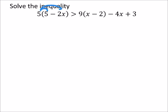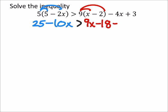So I'll distribute my 5 there. I've got 25 minus 10x, and this is greater than. I'll distribute my 9, so I've got 9x minus 18, minus 4x plus 3.